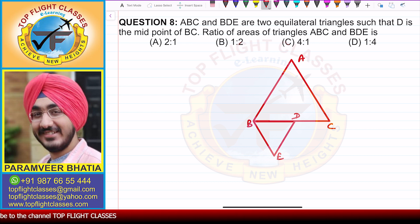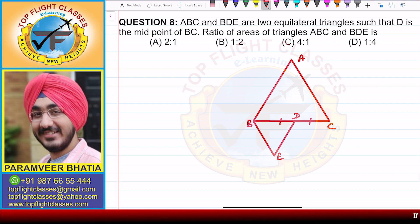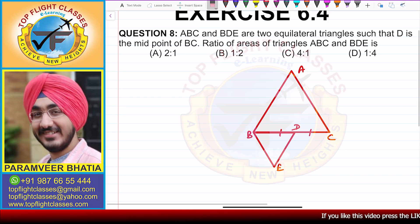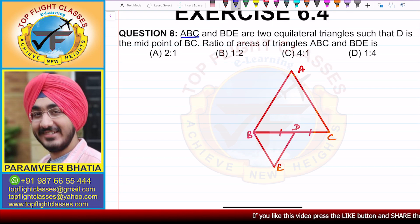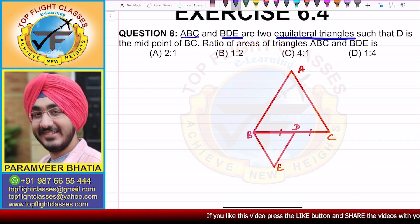From the diagram, D is the midpoint of BC, so BD is equal to CD. We need to find the ratio of areas of these two triangles. ABC and BDE are both equilateral triangles.